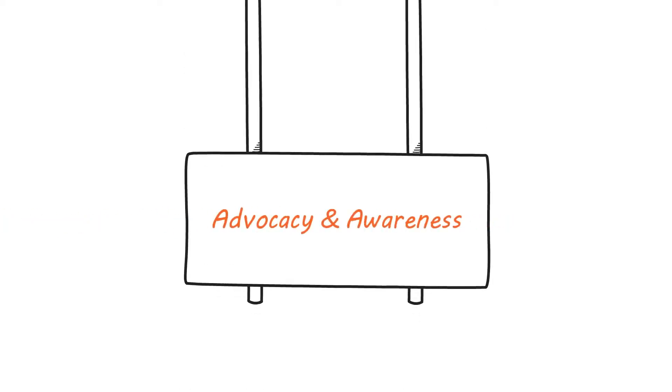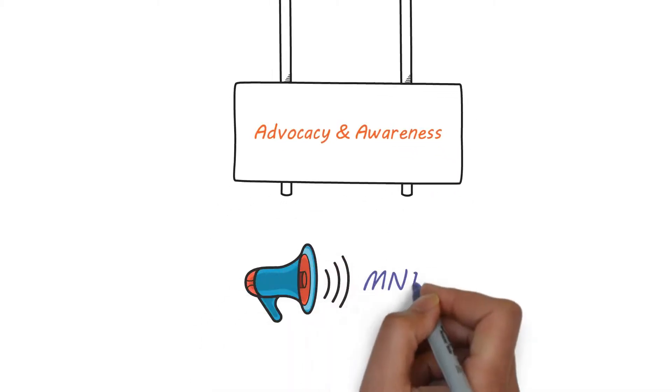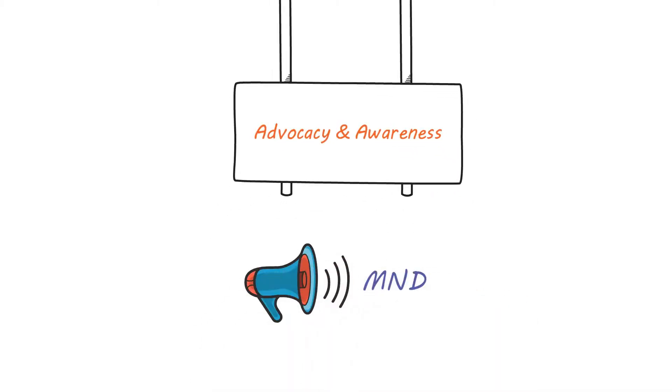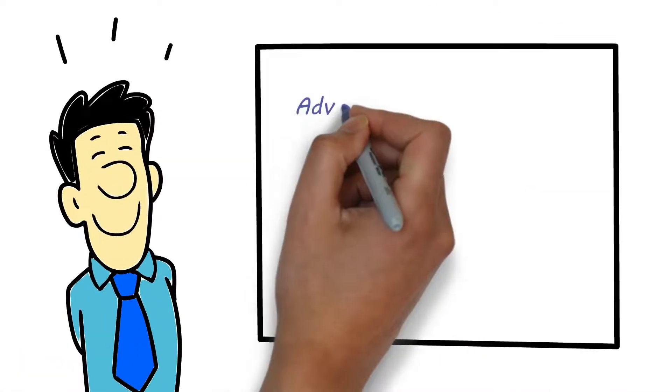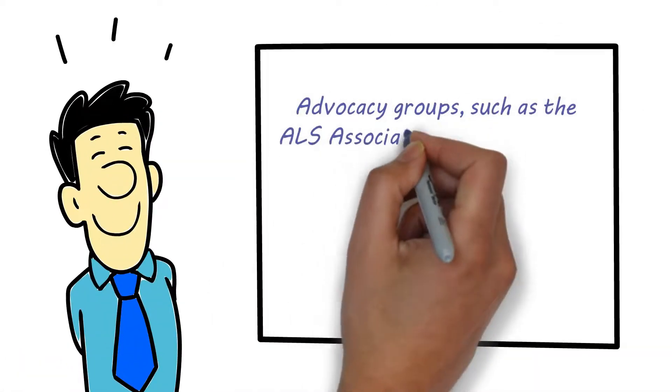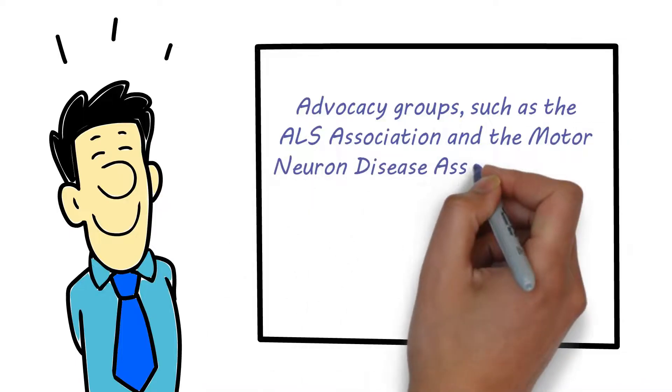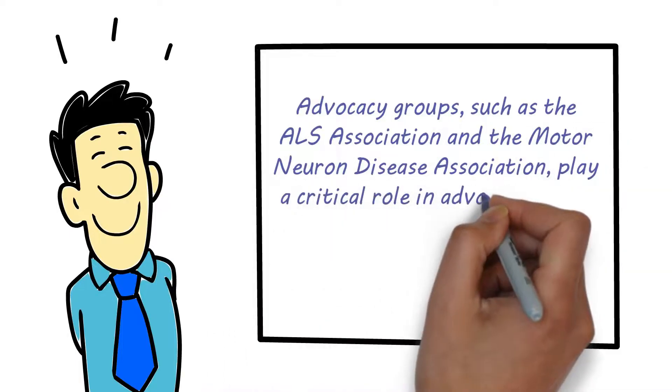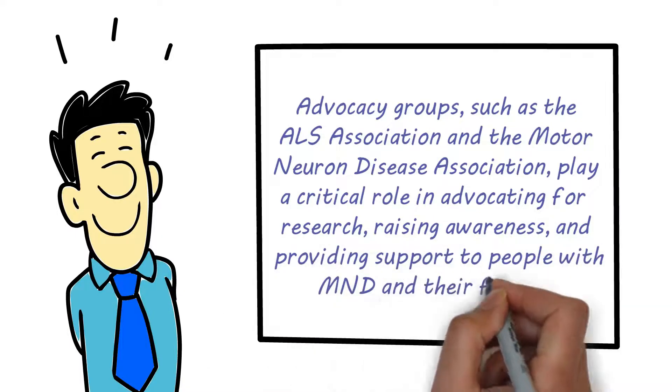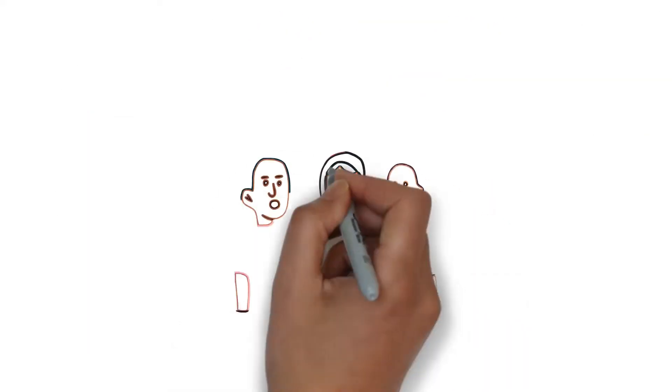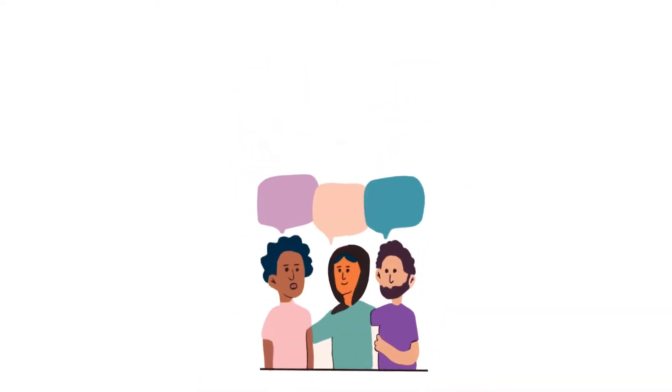Advocacy and awareness. Raising awareness about MND is crucial for improving understanding of the disease and supporting people affected by it. Advocacy groups, such as the ALS Association and the Motor Neuron Disease Association, play a critical role in advocating for research, raising awareness, and providing support to people with MND and their families.